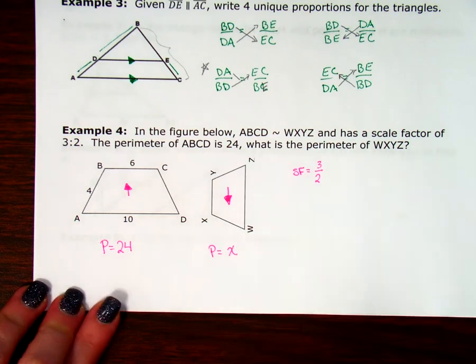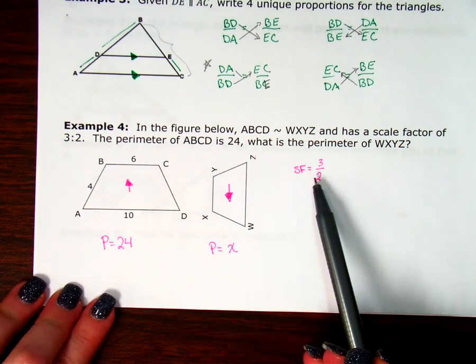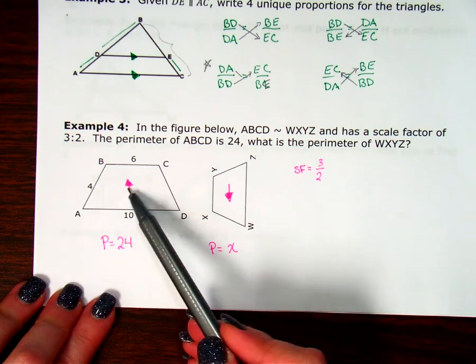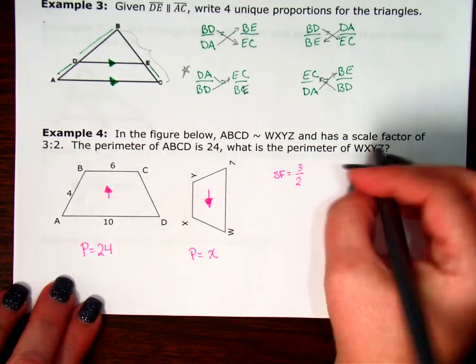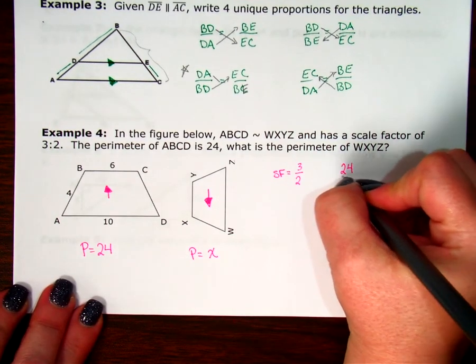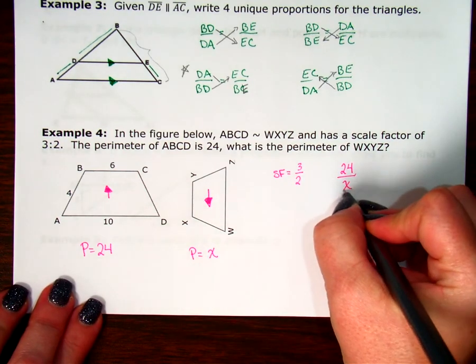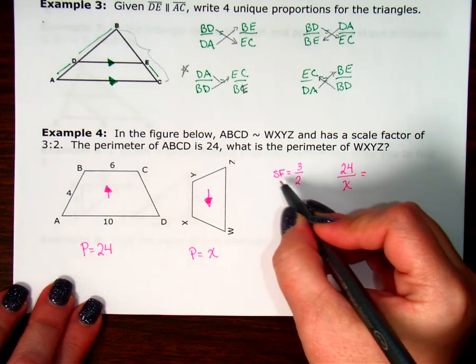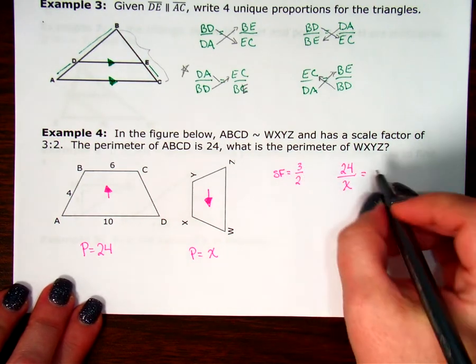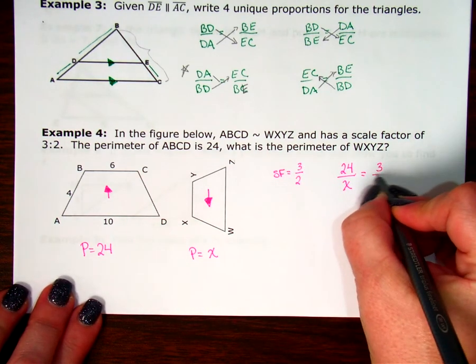Remember, your perimeters will also reduce to the scale factor. So my perimeter that goes on top is the 24. Over the perimeter that goes on the bottom is the X. And that's going to reduce to the same scale factor that the sides reduce to, 3 over 2.